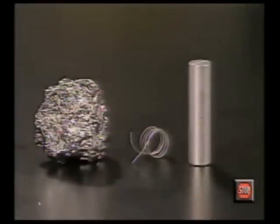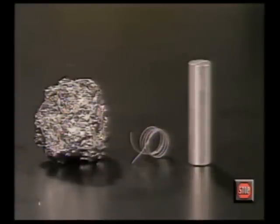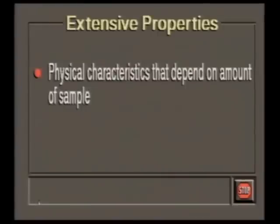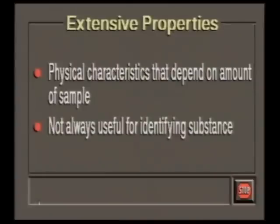Some physical properties — like size, shape, and mass — only relate to the amount of a sample of a substance. These are called extensive properties. Because extensive properties change from sample to sample, they are not useful for determining the identity of the substance.